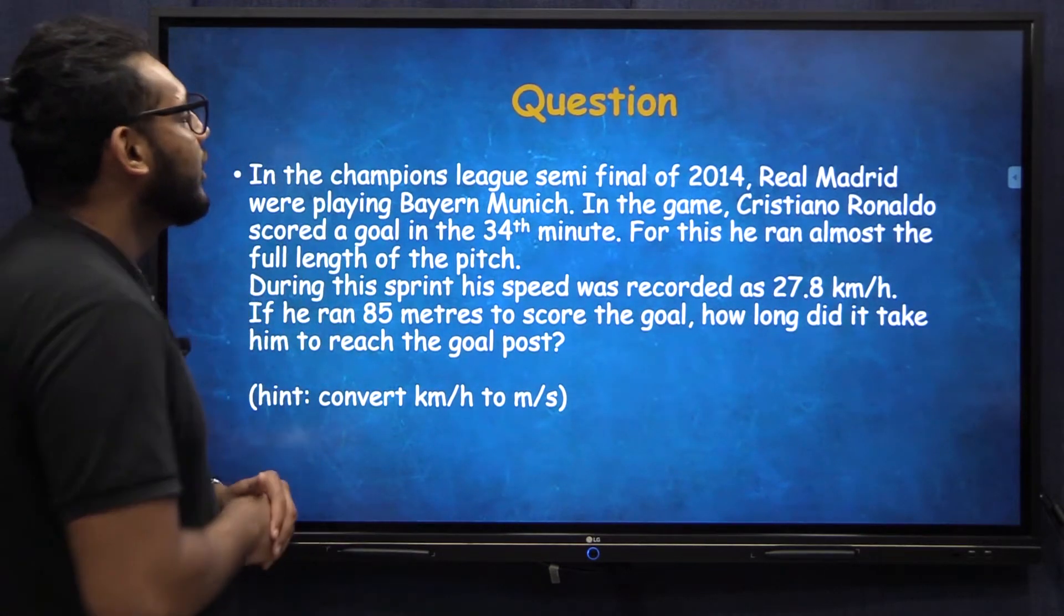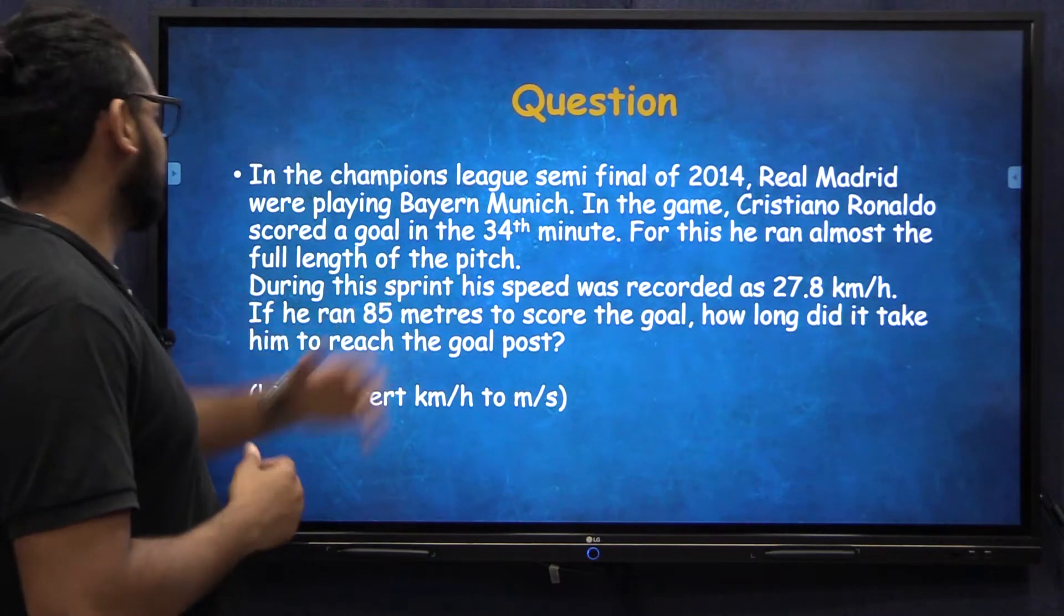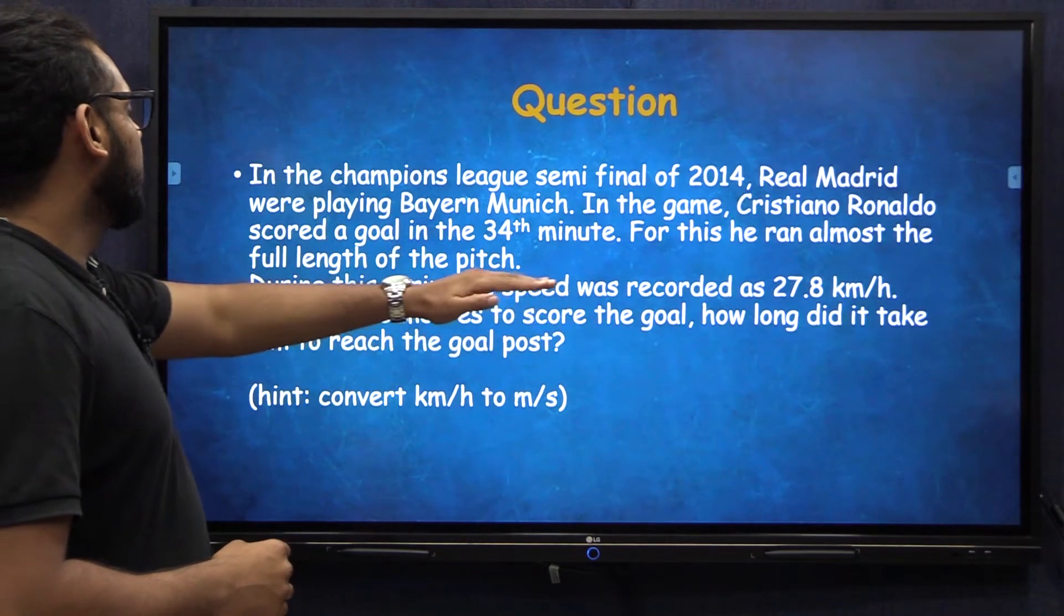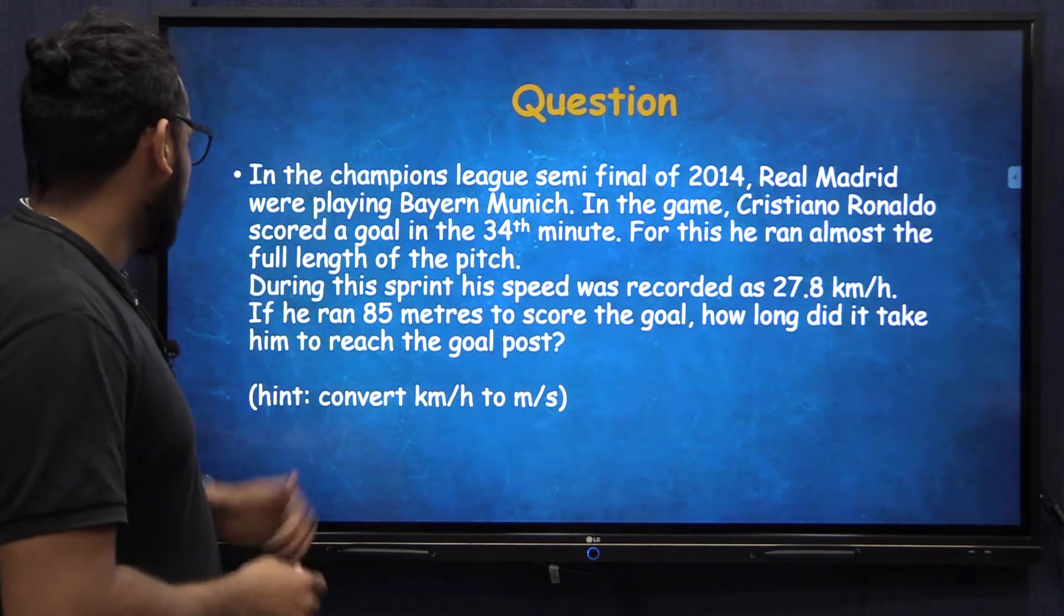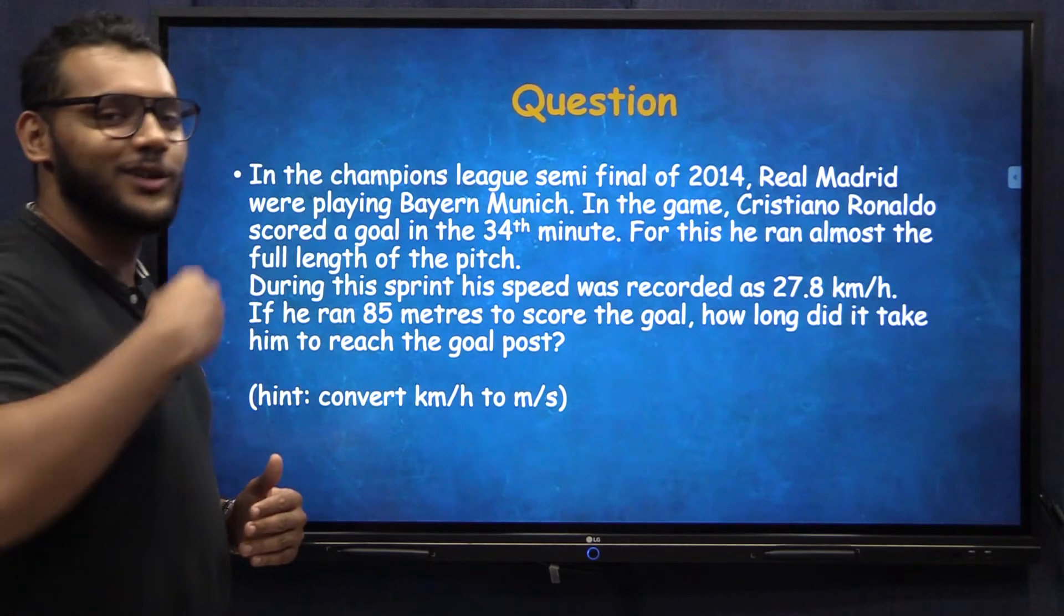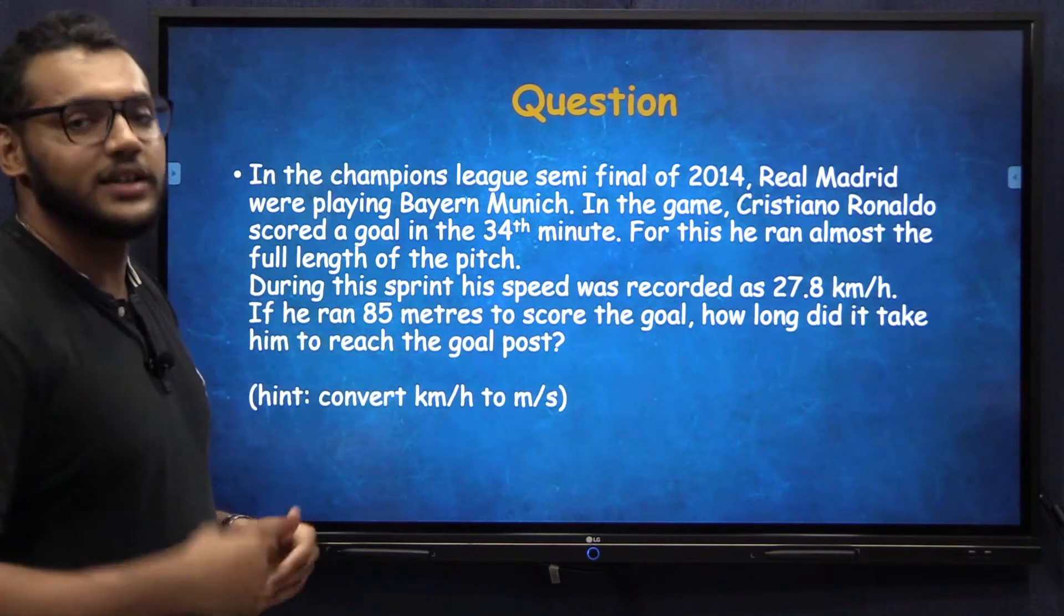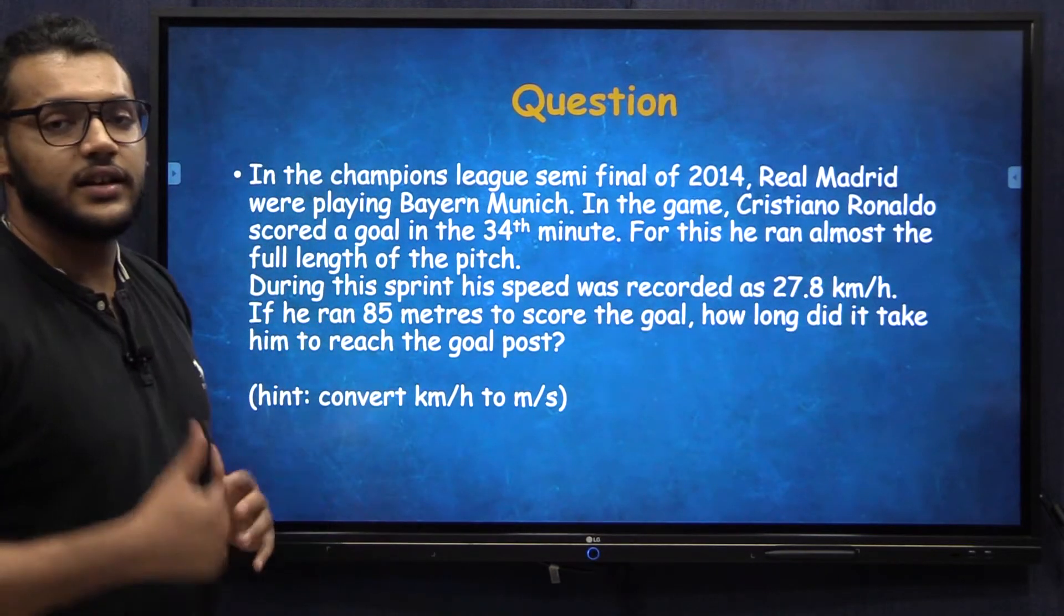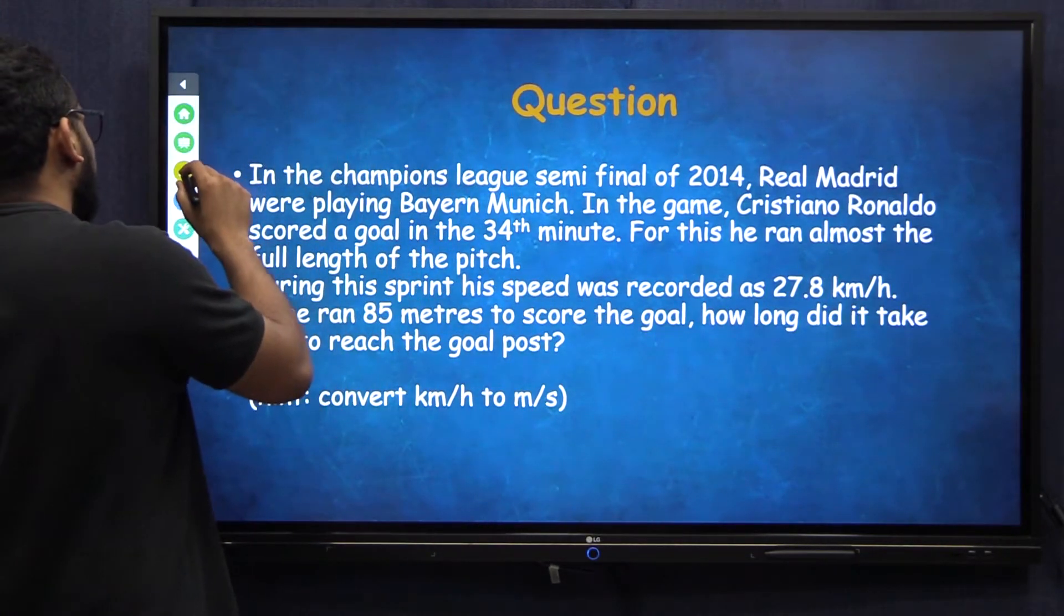Let's look at another problem. Here, let's go back to the 2014 Champions League semifinal between Real Madrid and Bayern Munich. In this game, Cristiano scored a very good goal in the 34th minute. For this goal, he ran the entire length of the pitch and scored that goal. But during the sprint, the speed was noted as 27.8 kilometers every hour. Now he ran 85 meters to score this goal. I want you to tell me how long it took from the point where Ronaldo started running to the point where he scored the goal. How long did it take him to complete this 85 meter sprint? Now there's a hint given for you here. This is in kilometers per hour and the distance is in meters. So we should convert the kilometer per hour into meter per second.